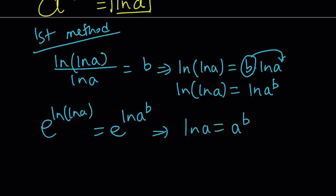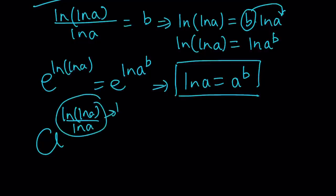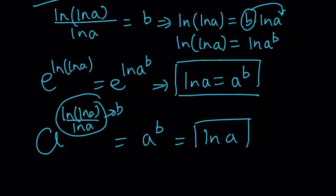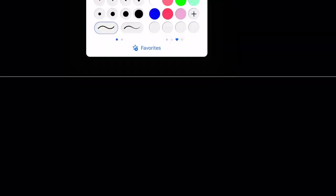Now, what does this give us? Well, ln a equals a to the power b, but what is our expression? If you look at our expression carefully, we have a to the power ln ln a over ln a, and we called this b. Therefore, our expression is actually a to the power b, which is ln a. Just like with the second method, the first method gave us the same answer — and of course it should.